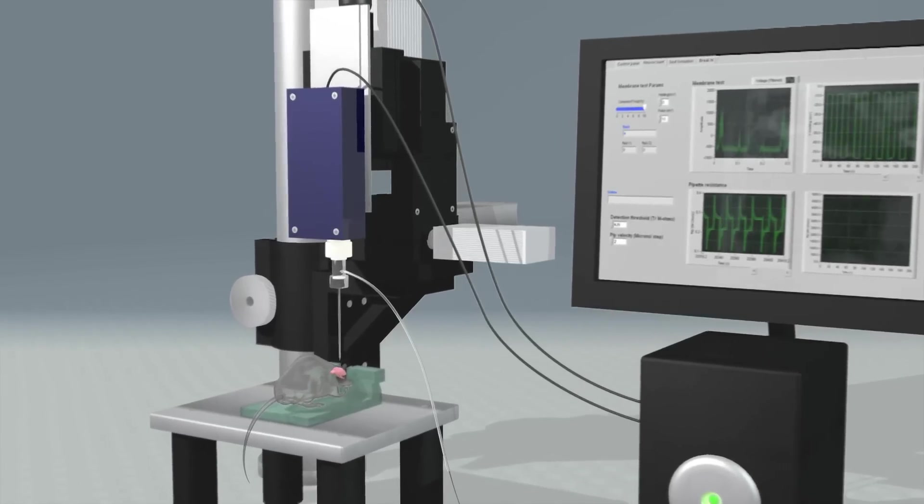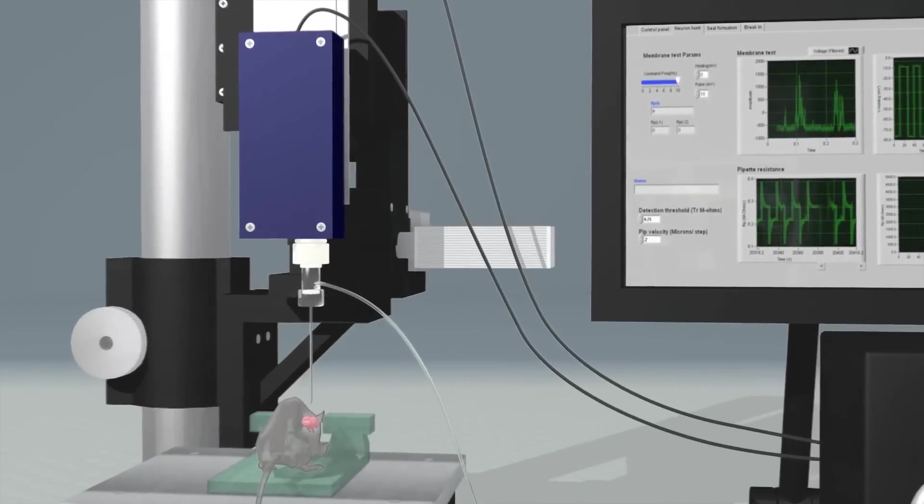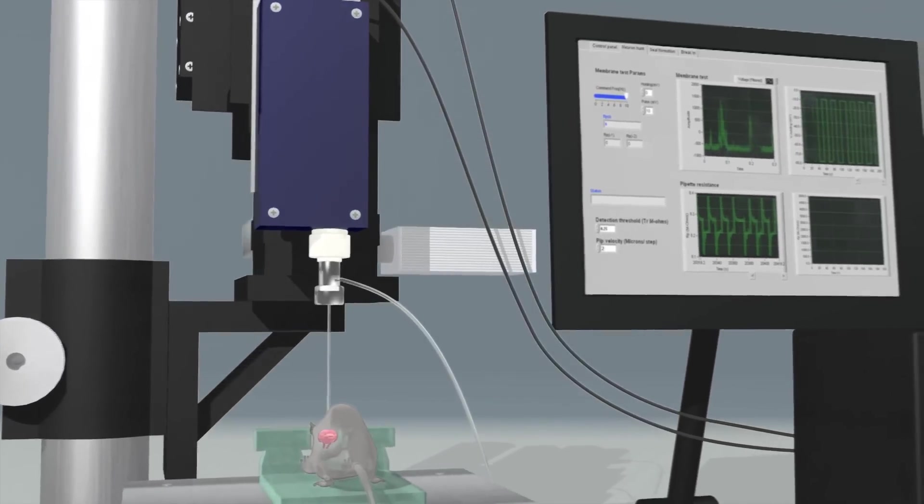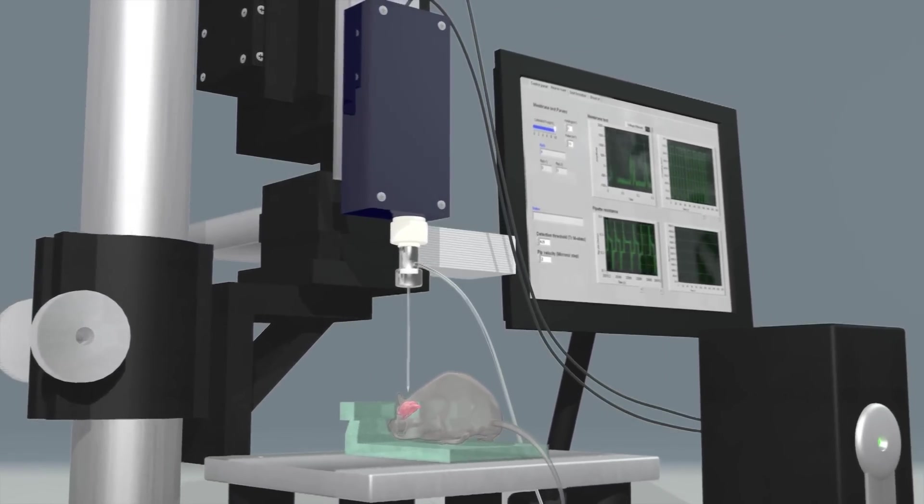The procedure of using pipettes to record neural activity, known as patch clamping, has been performed by humans for decades. But in the living brain it is difficult to do, something of an art form that only a small number of people have mastered.